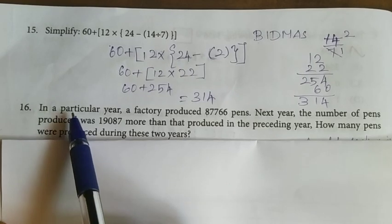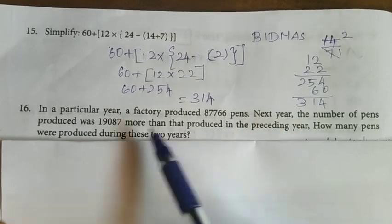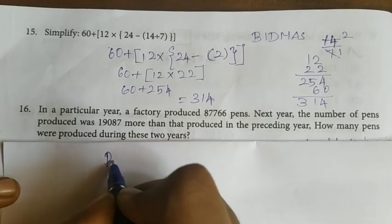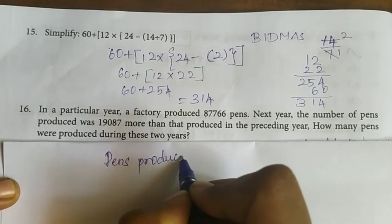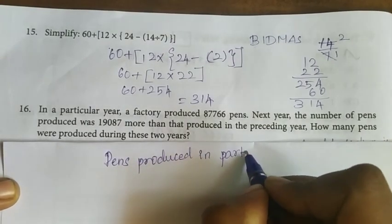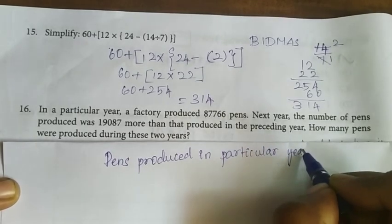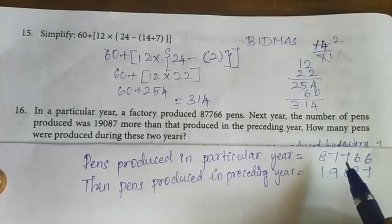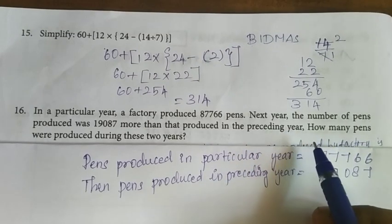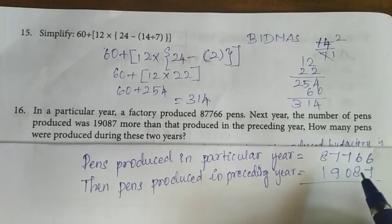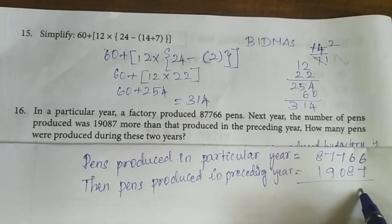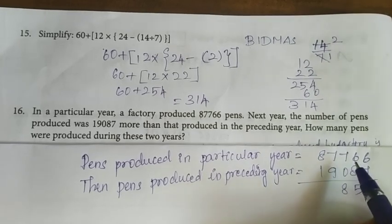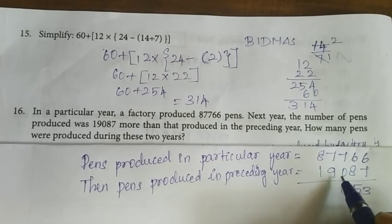Sixteenth question: In a particular year a factory produced pens, and also produced pens in the preceding year. How many pens were produced during these two years? We add the two numbers. Pens produced in the particular year = 87,76,608 (approx). Adding: 6+7=13, carry 1; continuing the addition gives the total pens produced across both years.